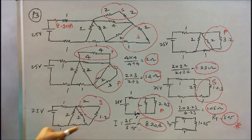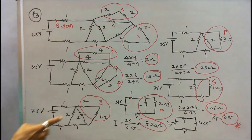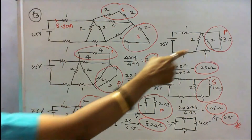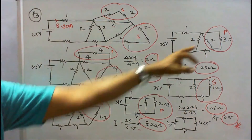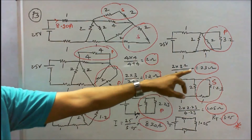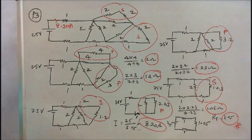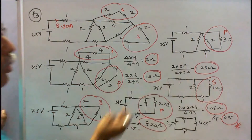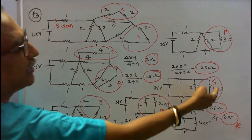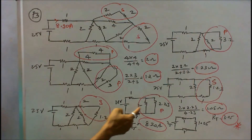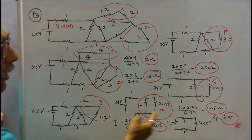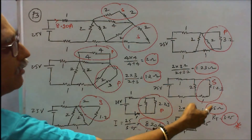Redrawing: 1.2Ω is in series with 2Ω, giving 3.2Ω. The 3.2Ω and 2Ω are in parallel: 2×3.2/(2+3.2) = 1.23Ω. The 1.23Ω is in series with the 1Ω resistor, giving an effective resistance of 2.23Ω. Then 2.23Ω is in parallel with the 2Ω resistor: 2×2.23/(2+2.23) = 1.05Ω.